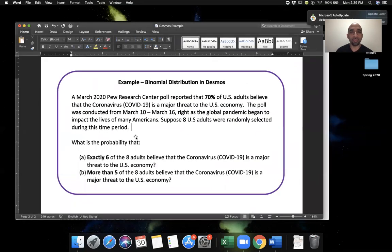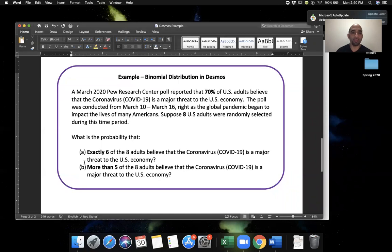So 70% of adults believe that the coronavirus is a major threat to the US economy. The poll was conducted March 10th through March 16th. So the question says, suppose at this time, eight US adults were randomly selected during this time period. We want to find the probability for part A that exactly six of the eight adults believe that the coronavirus is a major threat to the US economy.